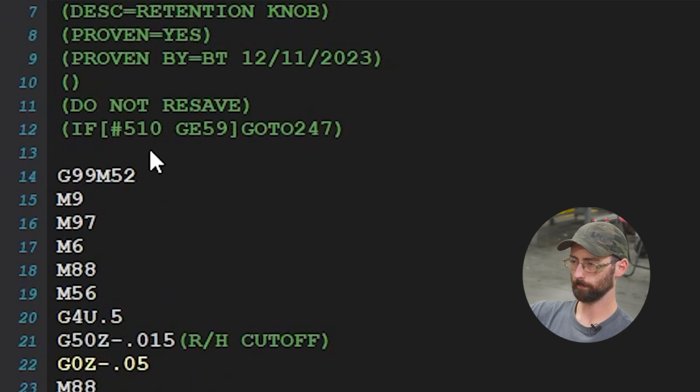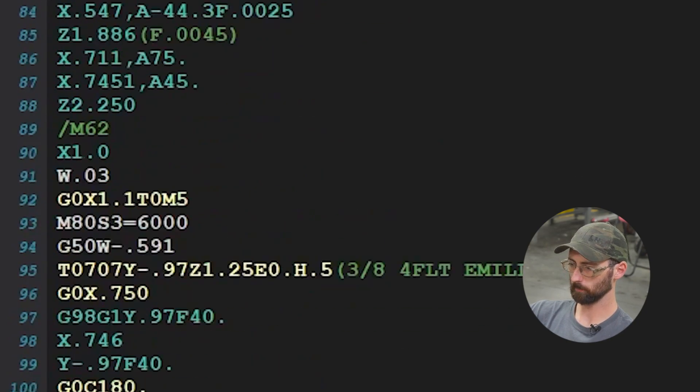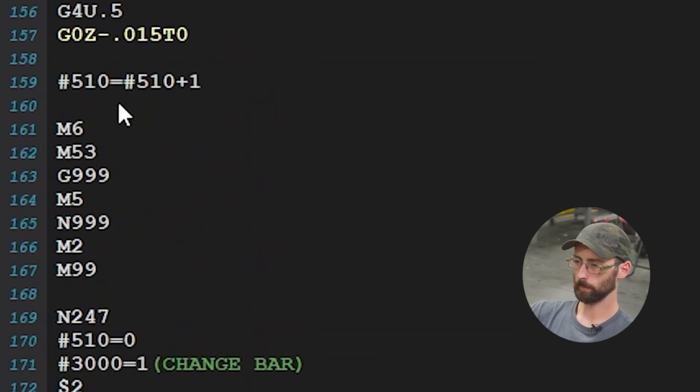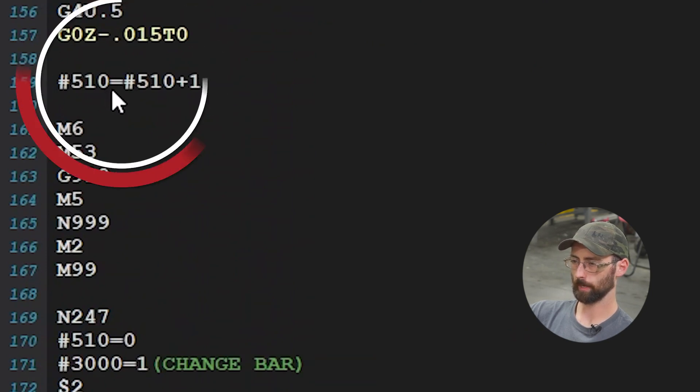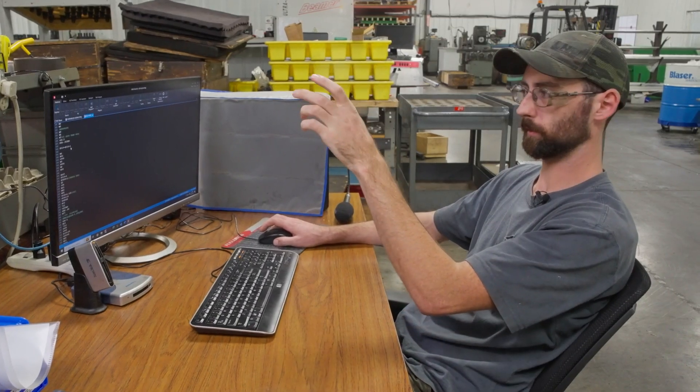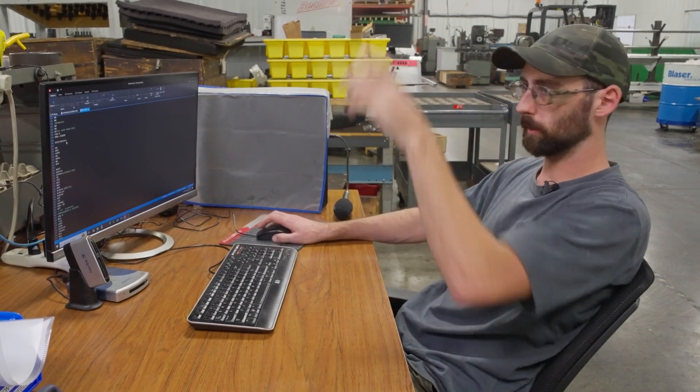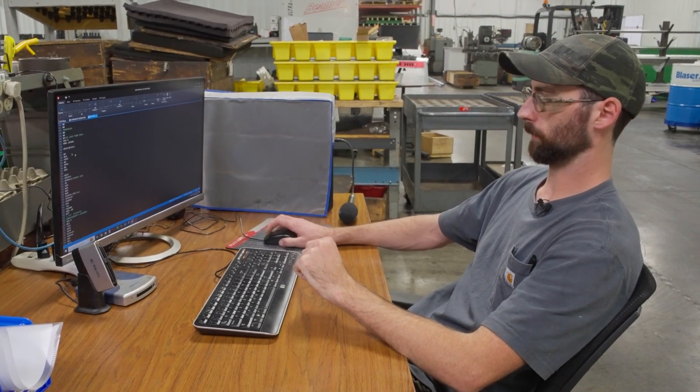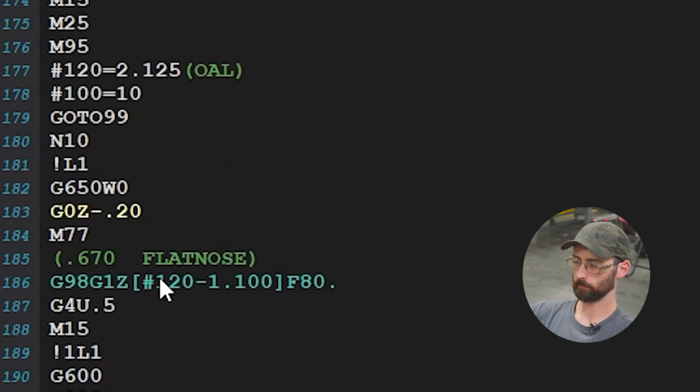Look at this logic statement: if #510 is greater or equal to 59, go to 247. At the bottom of the program we have #510 equals #510 plus 1. Every time it runs the program it adds 1 to the count. When that conditional statement is met, it does something else. A real basic example of how you can use logic statements and variables.